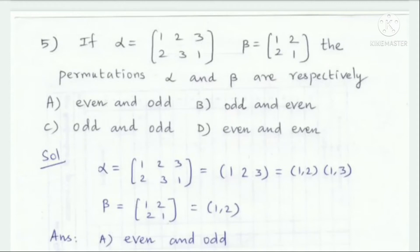For beta permutation: the first cycle maps 1 → 2 and 2 → 1. This is a (1,2) transposition — one transposition, so cycle is complete. Because cycle length 2, transposition automatically happens. Beta is an odd permutation.